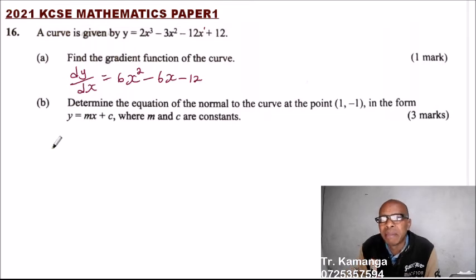Part B. Determine the equation of the normal to the curve at the point (1, -1), in the form y equals mx plus c, where m and c are constants.